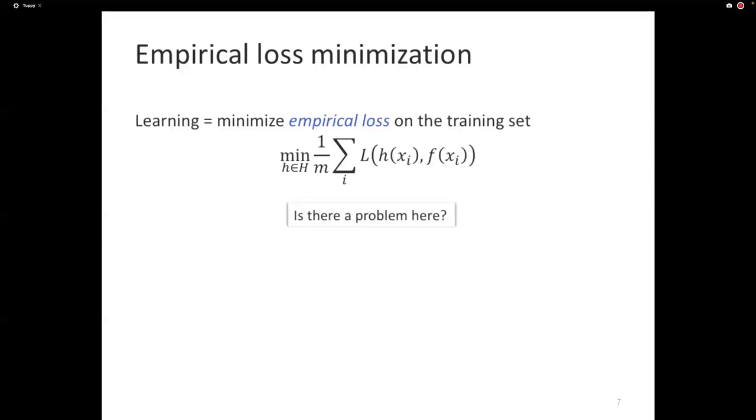What about overfitting though? I can give you a classifier that, what is the lowest empirical loss that you can ever get? Zero. And the way you get that is just memorizing the training data. You can just put the training data in a table and if that test example is in the table, you just return the label that was associated with that. Otherwise, you just flip a coin.